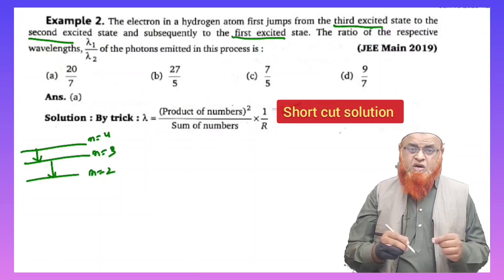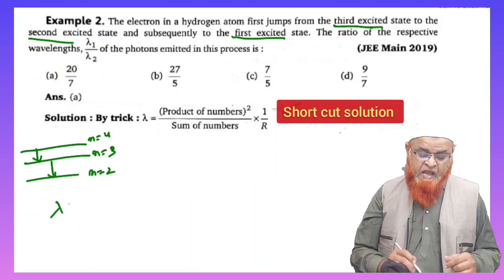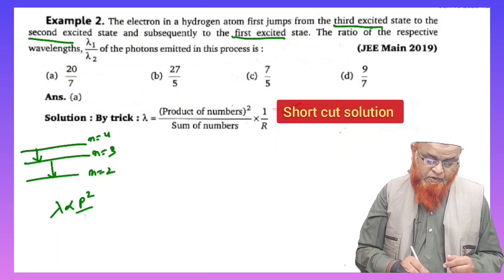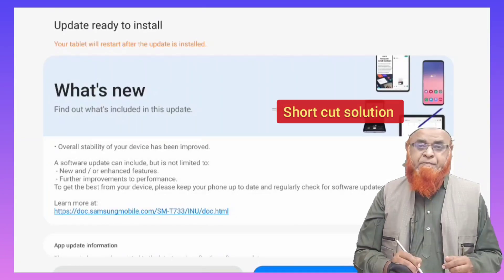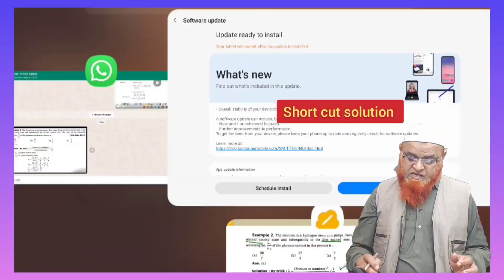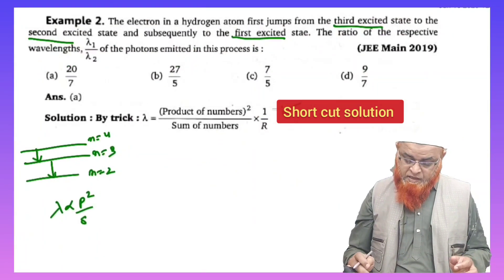According to the problem or short trick, lambda is directly proportional to product whole square divided by sum. So product whole square divided by sum.